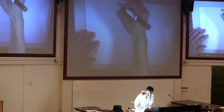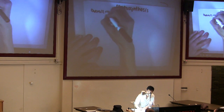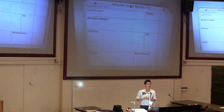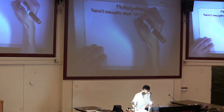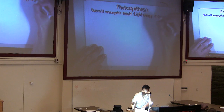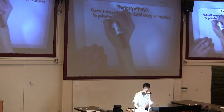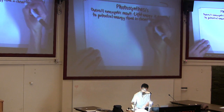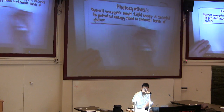Starting with photosynthesis — what's the overall energetic result? You start with light energy, which is converted to potential energy stored in the chemical bonds of glucose. That's the overall goal of photosynthesis.